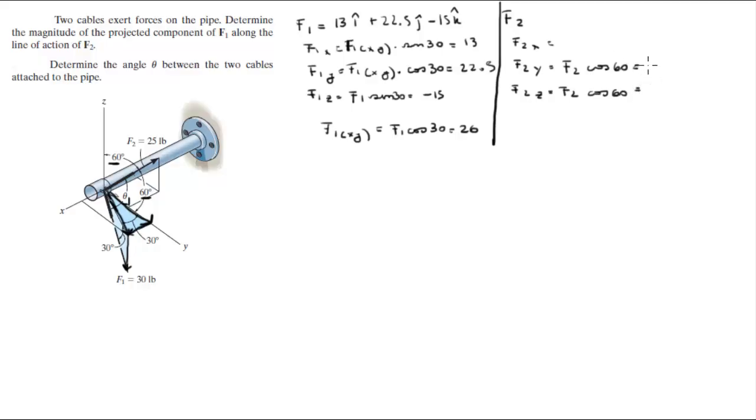And these numbers are 12.5 each, they're the same. So we got the magnitude which is 25 pounds, the magnitude of F2.